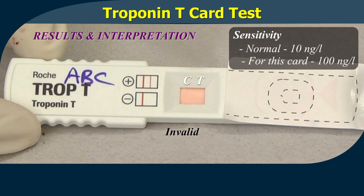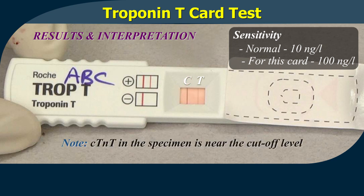If no coloured line appears in the control area within 15 minutes, the test result is invalid. The test result is inconclusive and the assay should be repeated. Note: a very faint T line indicates that cardiac troponin T in the specimen is near the cut-off level. The samples should be retested or results confirmed by another quantitative assay.